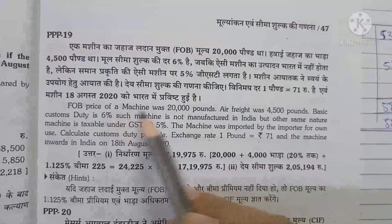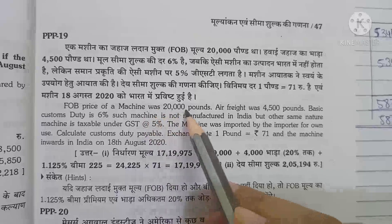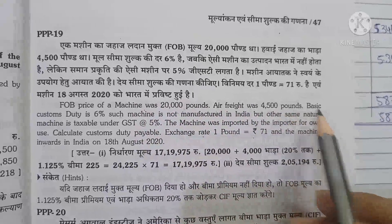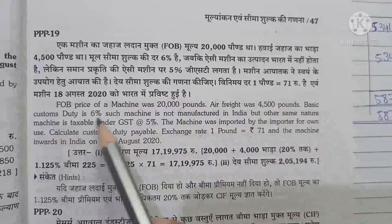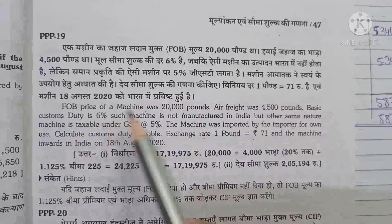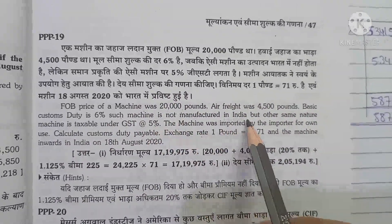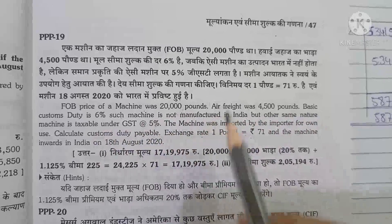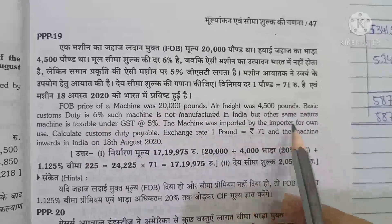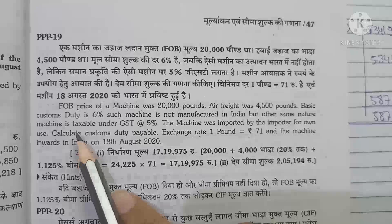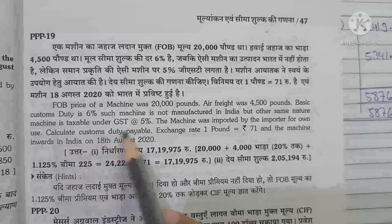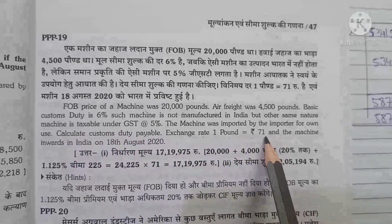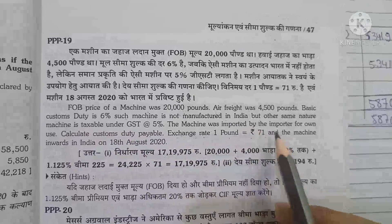Question number 19: FOB price of the machine is £20,000, air freight is $4,500. Basic custom duty is payable. This machine is not manufactured in India but GST is 5%. The importer has imported it for own use. We have to calculate custom duty payable. Exchange rate: £1 = ₹71.